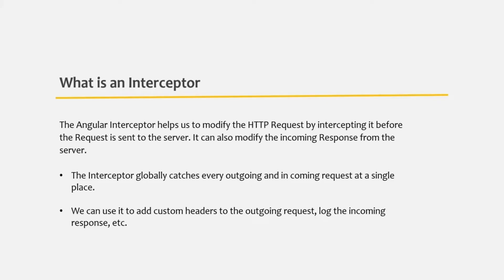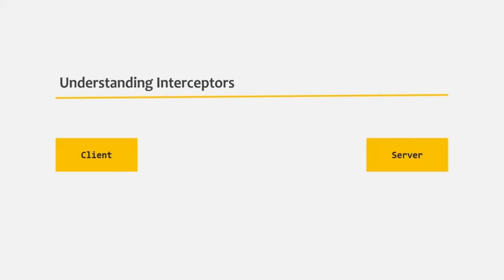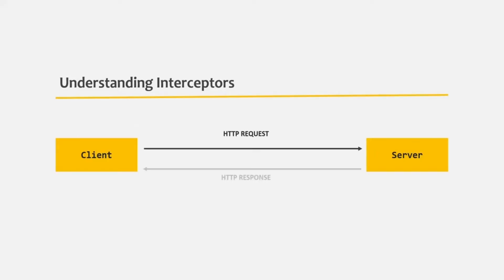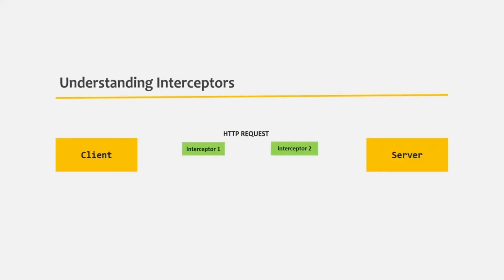Now let's try to understand interceptors with a simple diagram. Typically from our client, we send a request to the server and the server sends us the response. But when we use interceptors, when we send the request from the client, it is first received by the interceptor.